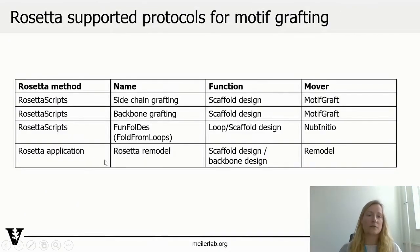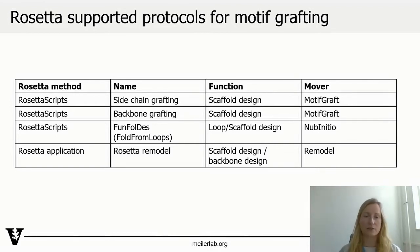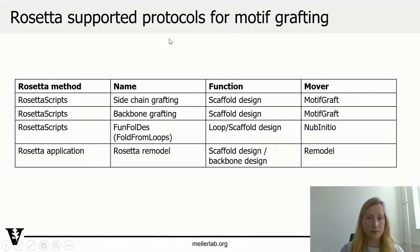This is an overview of the available protocols, and it's really interesting to understand how they're implemented. The four things we're going to be talking about today are sidechain grafting, backbone grafting, FunFold design — which has previously been known as FoldFrom loops — and then we're going to briefly mention Rosetta Remodel. The first three protocols are implemented in RosettaScripts, which makes it really easy for us to modify these protocols and use them in other contexts.